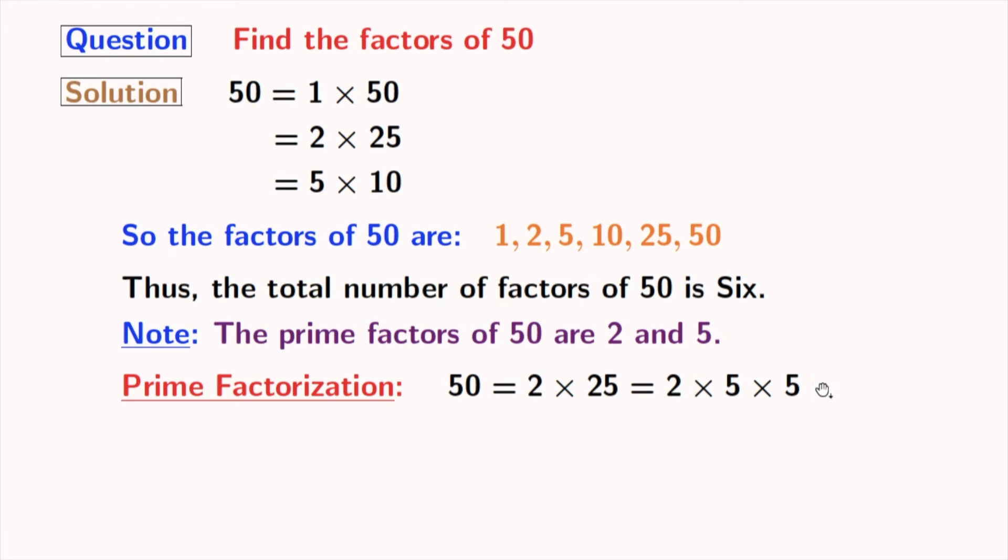Now, all these numbers are prime numbers. So, we cannot factorize it further. So, the prime factorization of 50 is 2 times 5 times 5.